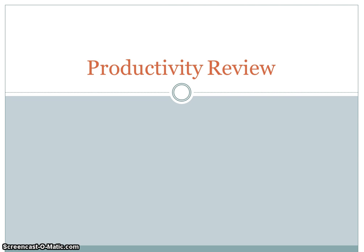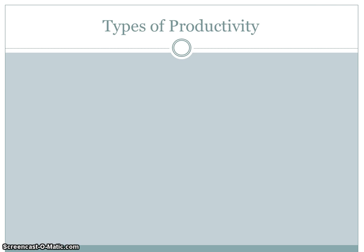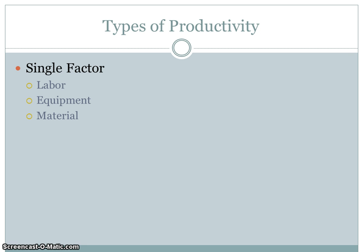Hello and welcome to our review tutorial on productivity. When we think about productivity, we can distinguish between two major types. We can think about single-factor, or sometimes called local productivity — such as the productivity of your labor force, an individual laborer, or even the productivity of your equipment or materials.